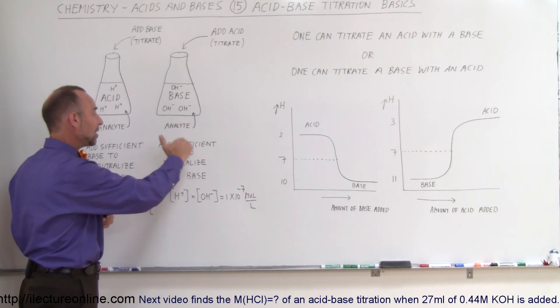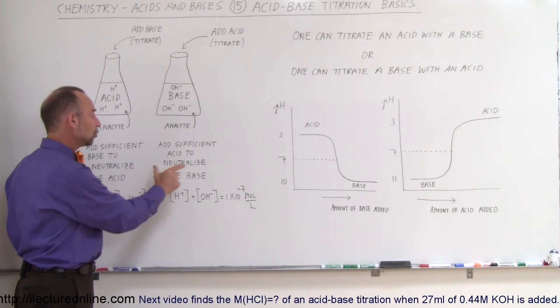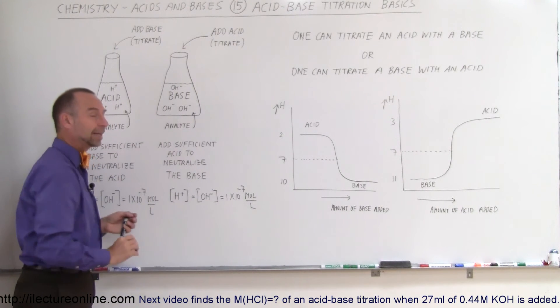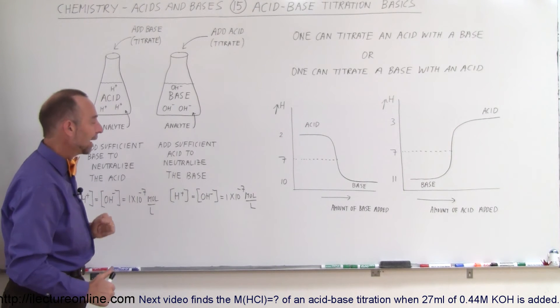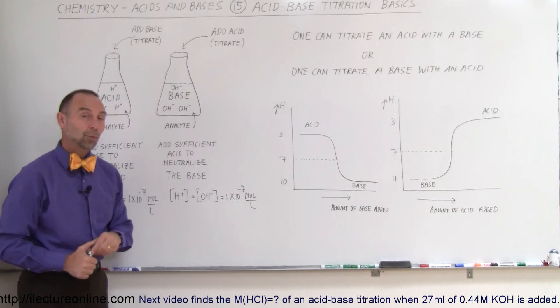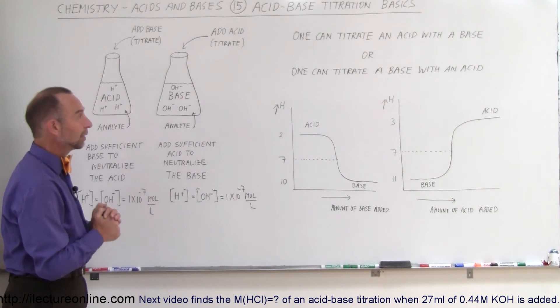Eventually, as you continue adding enough acid, you will neutralize the base where the concentration will be the same—hydroxide ions and hydrogen ions at 1 × 10⁻⁷ moles per liter.